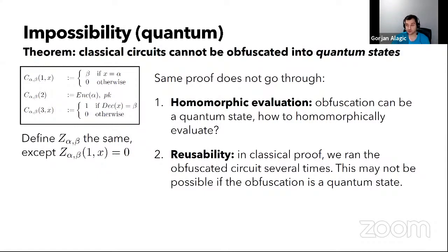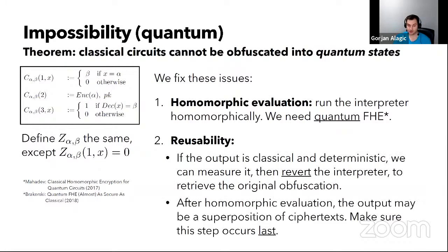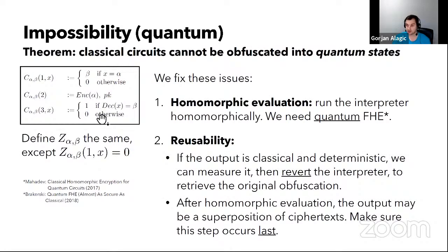Now what about the case of quantum states? We're going to use the same idea for the counterexample family, but there are two obstacles. One is how to do this homomorphic evaluation given that what we have is a quantum state and not a circuit. The other problem is reusability — in the previous example, we had to use this circuit three times. It could be that the obfuscator that produces quantum states just blows up after you use it once due to measurement. The first ingredient is relatively easy using the new quantum FHE. The second requires a trick: turning two of the three parts into classical information so we can extract them without damaging the state.